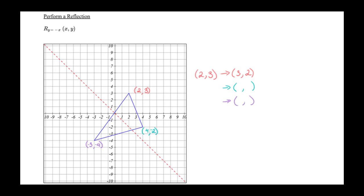For the first vertex (2, 3): 2 was positive, now it's negative. 3 was positive, now it's negative. Swapping and negating gives us (-3, -2). For the second vertex (4, -2): swap the coordinates.